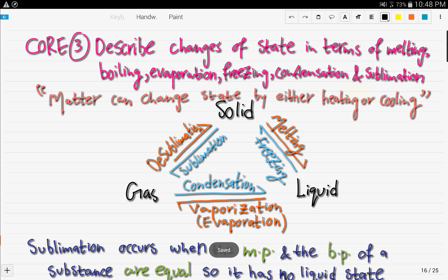So the third objective, which is also core, is describe the changes of state in terms of melting, boiling, evaporation, freezing, condensation, and sublimation. So you need to really have a good understanding of all of these processes. And before understanding these processes, you have to understand that matter can change states by either heating or cooling.